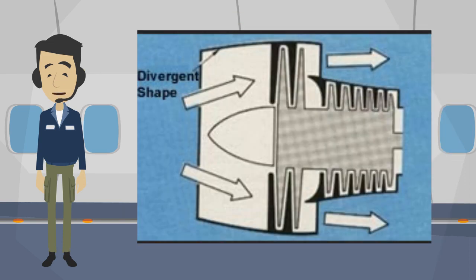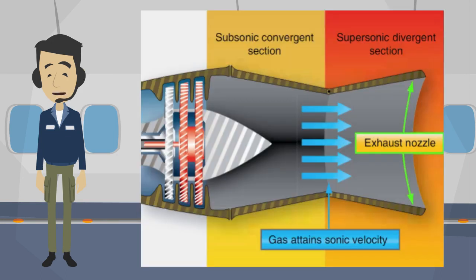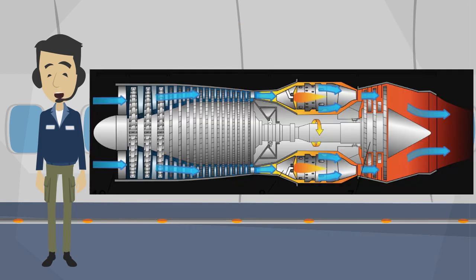Turbine engine inlets, turbine engine exhausts, and the compressor, diffuser, combustion, and turbine sections of a turbine engine.